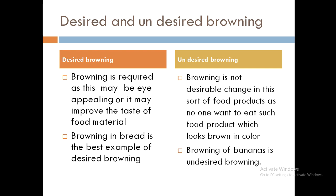For undesirable browning, no one likes bananas which are brown in color — that is an undesirable browning. Even fats turn brown when they are left aside for months; they react with the outer environment and turn brown in color. No one likes to consume fats which are brown in color, so that is also undesirable browning.